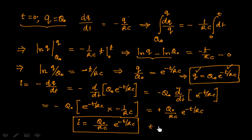For example, when T = 0, the current is Q₀/RC. Similarly, when T = 0 in the charge equation, e^0 = 1, so Q = Q₀ — which is exactly the initial condition we have. So we discussed how to find charge as a function of time and current as a function of time in the case of a discharging capacitor. We apply Kirchhoff's law, write a differential equation, solve it for Q, and differentiate Q to get the current.